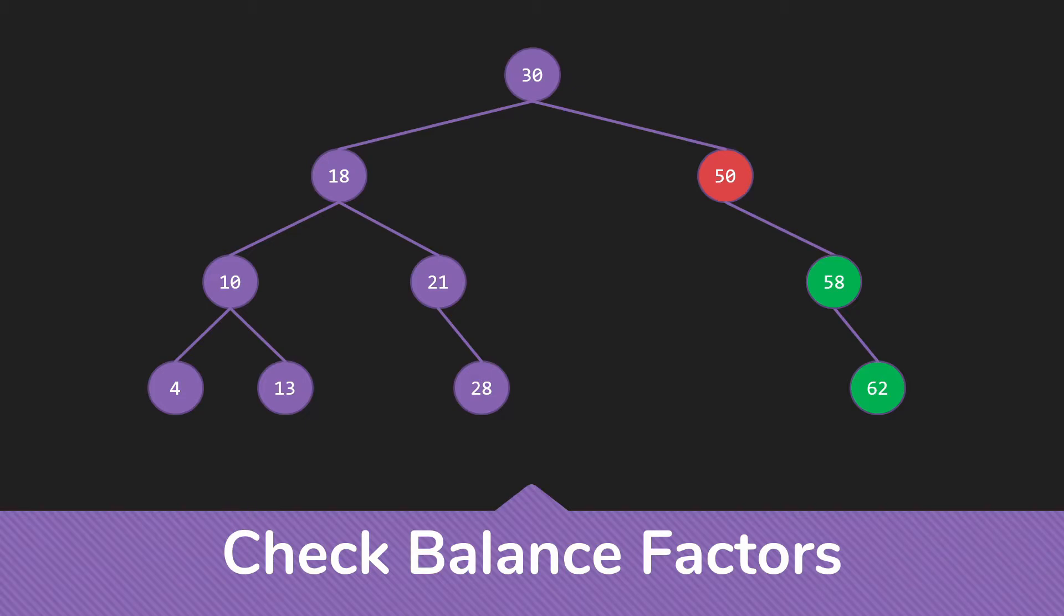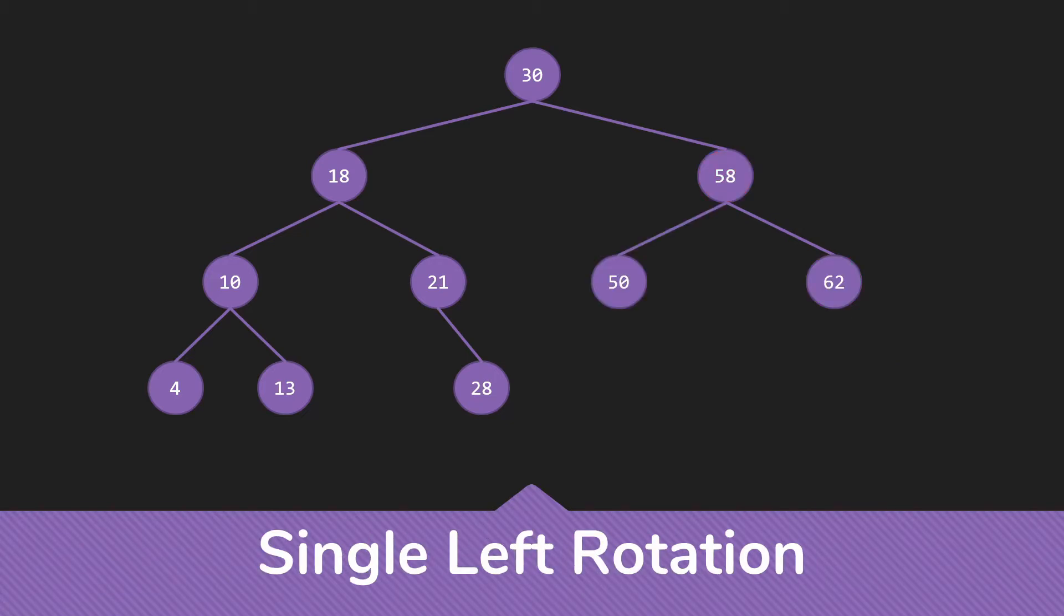The idea here, then, is that we're going to take the parent node from the original, the node right below the one that was out of balance, and the node that's out of balance, and we're simply going to rotate them. So 58 is going to become the parent with 50 as its child. Like so. And now you see the tree is back to being an AVL tree.